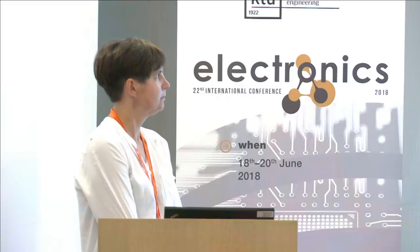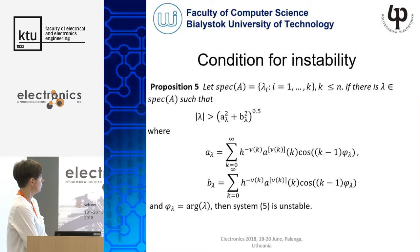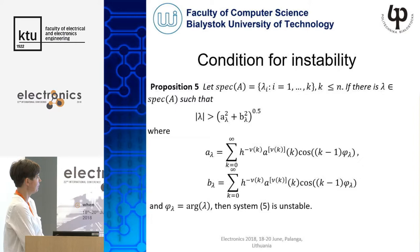Are there any questions? Could you please go back to the instability criterion slide? I got confused about the a_lambda and b_lambda coefficients — they appear to be the same. Oh, yes, that's a copy-paste error — they should be conjugates of each other. Sorry about that. Any other questions? Thank you very much again.